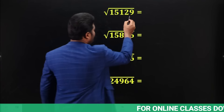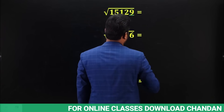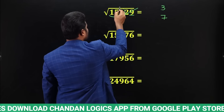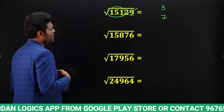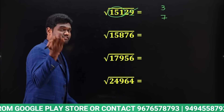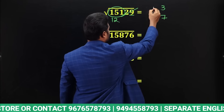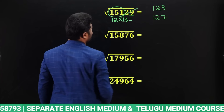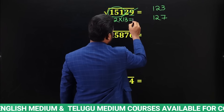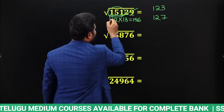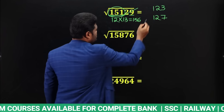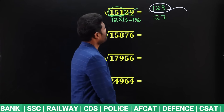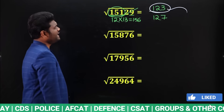For √15129: last digit is 9, possibilities are 3 or 7. Strike off last two digits — remaining is 151. Perfect square close to 151 and less than 151 is 12² = 144 (since 13² = 169 is too big), giving 123 or 127. Multiply 12×13 = 156. Compare: 151 is less than 156, so answer is the smaller value — 123. So √15129 = 123.